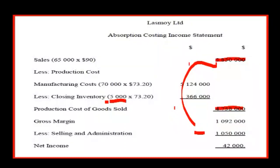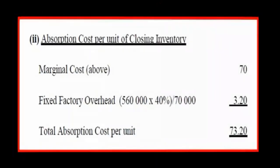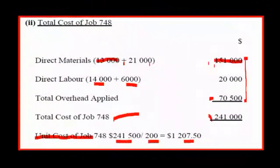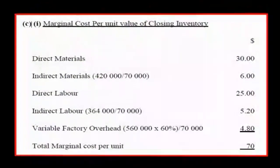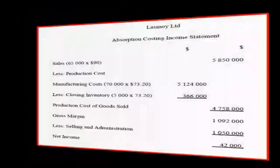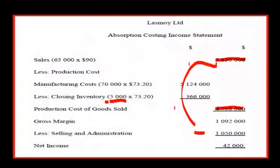Selling and admin costs total $1,050,000. We deduct that from the gross profit to get the net income of $42,000. That brings us to the end of the presentation. Thank you.